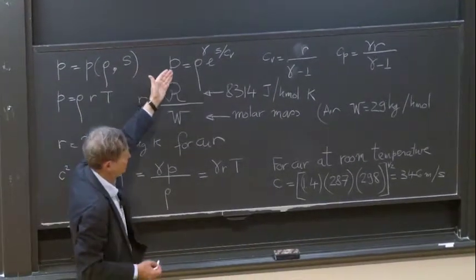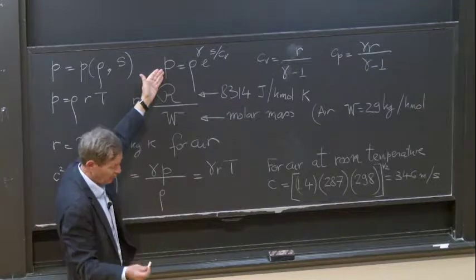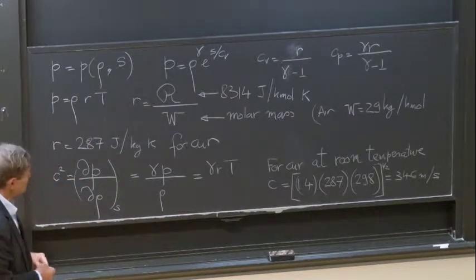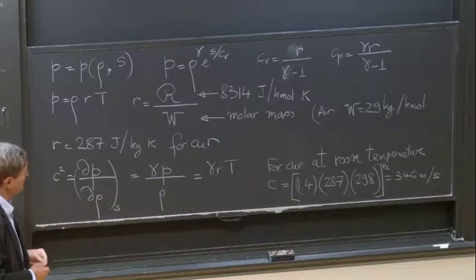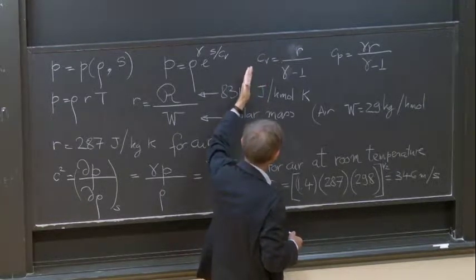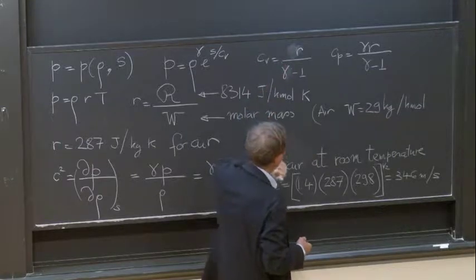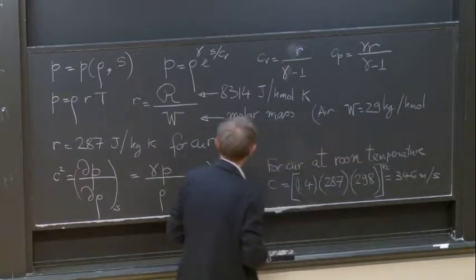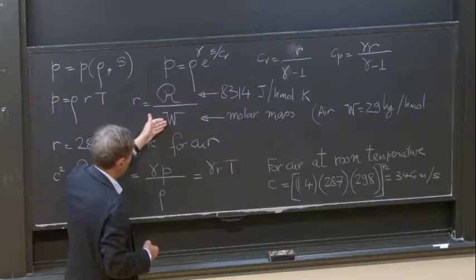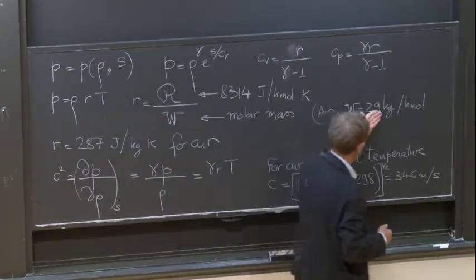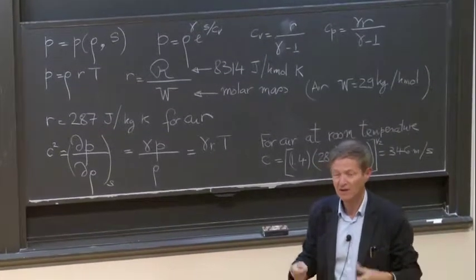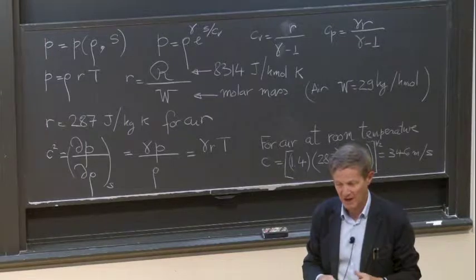So if you want to calculate the speed of sound, you use this expression. For that you need to know the relation between the pressure, the density, the entropy. For a perfect gas, P is equal to ρ^γ times e^(S/Cv). Cv here is the specific heat per unit mass at constant volume, which is R over (γ minus 1). Cp is γR over (γ minus 1). R itself is the universal gas constant divided by the molar mass. For air, the molar mass is 29 kilograms per kilomole because air is formed by 80% nitrogen and 20% oxygen.